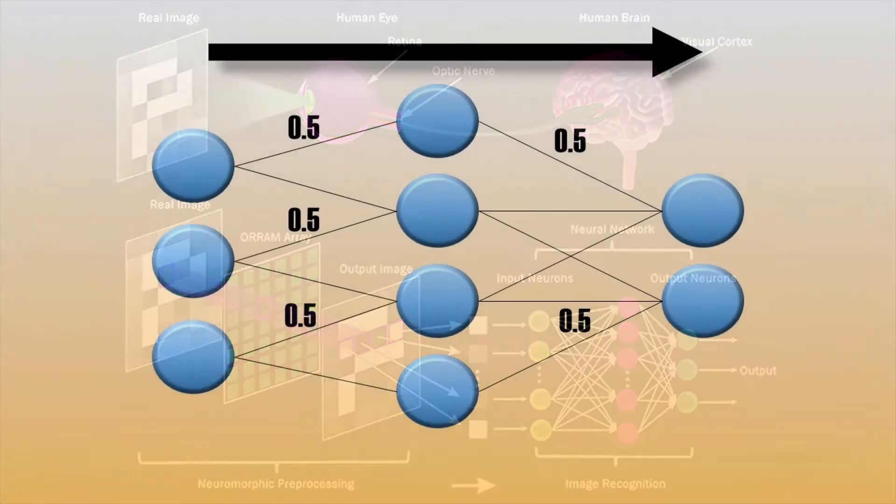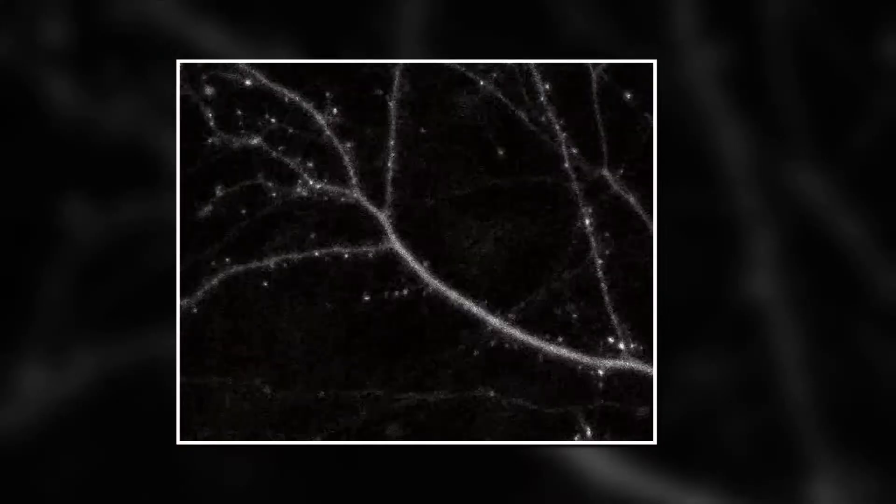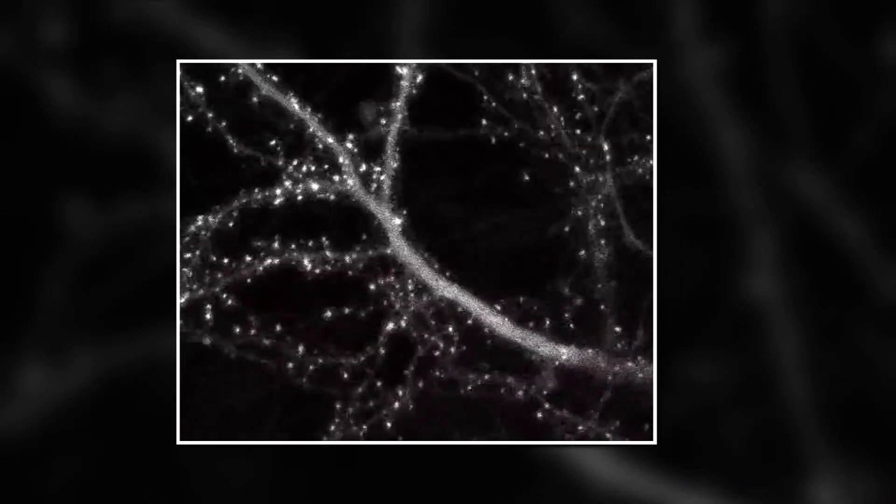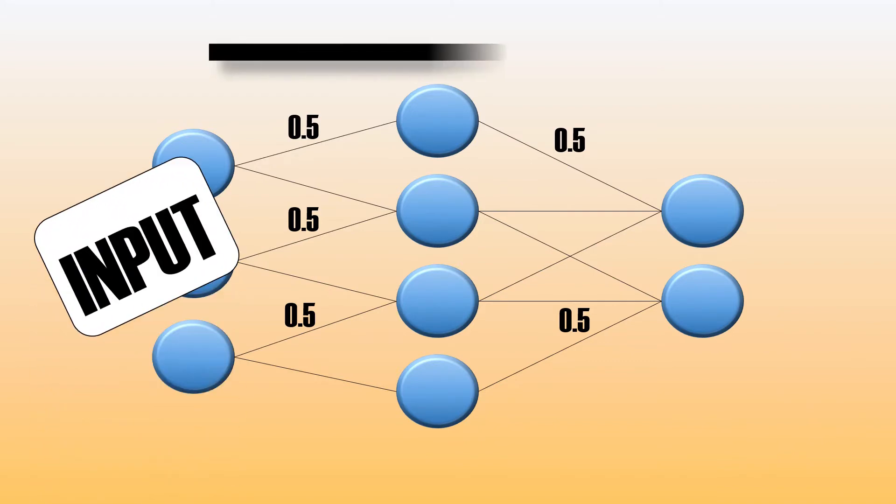Now, information is passed through the network many times, and each time the connection weights are updated. This is reminiscent of neuroplasticity in the brain during learning. Initially, all weights in the neural network are random, and the answer that would come out would probably be nonsensical.